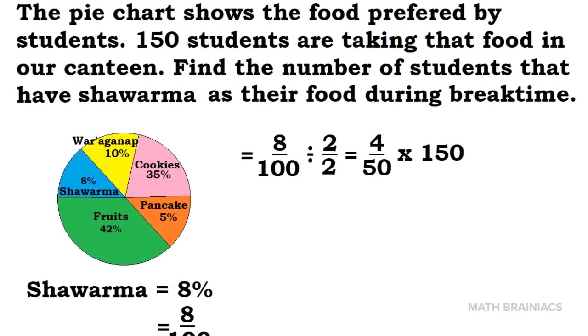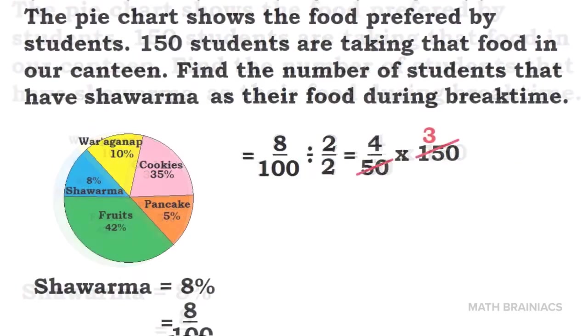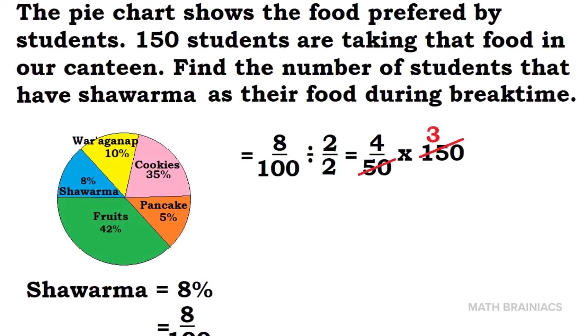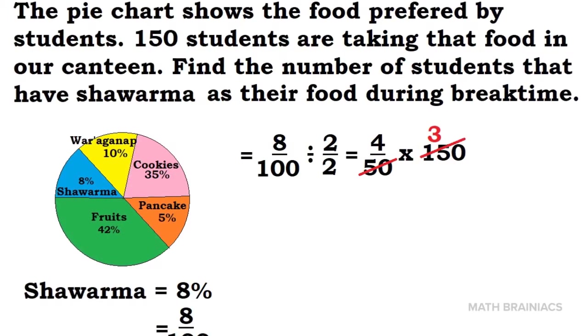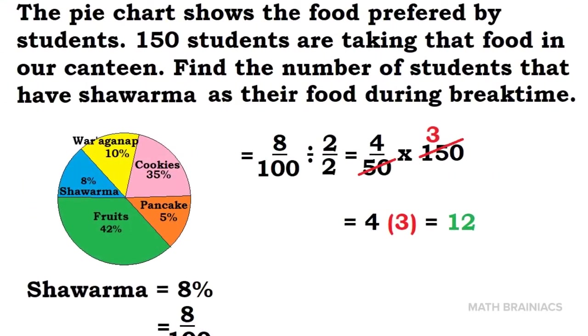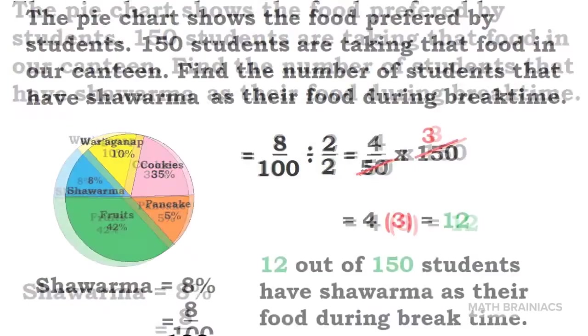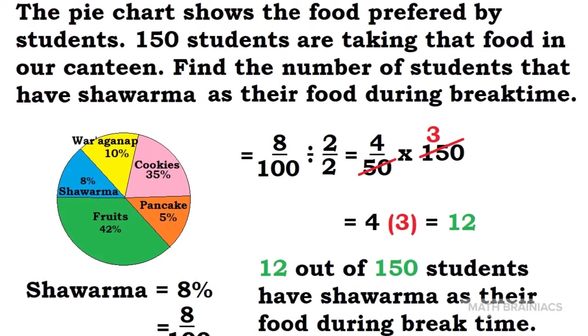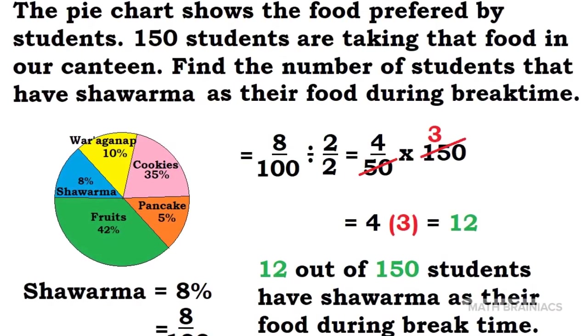Multiplying 4 over 50 by 150, we can cancel out 50 and 150. Therefore, 50 in 50 is 1, and 50 in 150 is 3. To simplify, 4 times 3 is 12. Subsequently, 12 out of 150 students have shawarma as their food during break time.